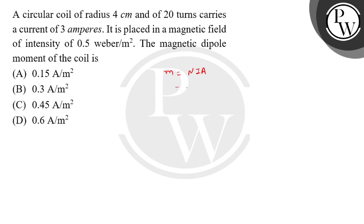So let's do that. Firstly, the number of turns is 20, current is 3 amperes. And because it is a circular coil, the cross-sectional area would be circular, so it is pi r squared. Pi and r squared, r is the radius, and radius is 4 centimeters.